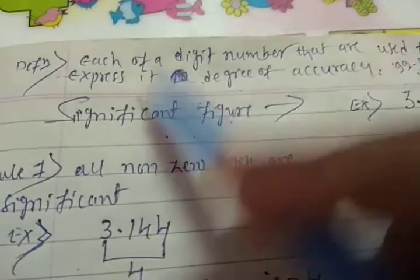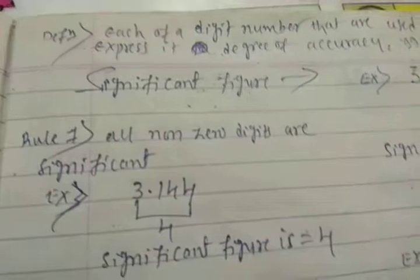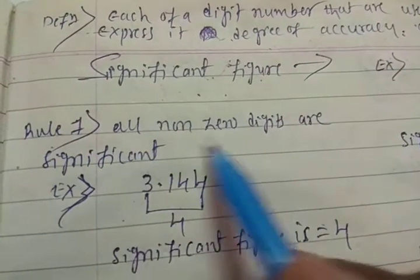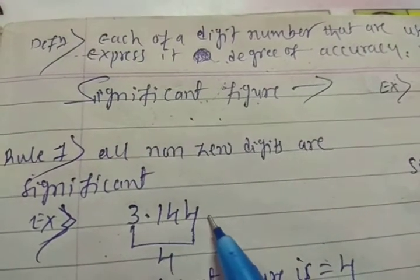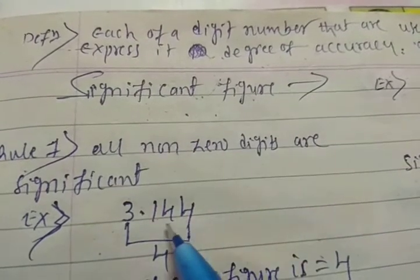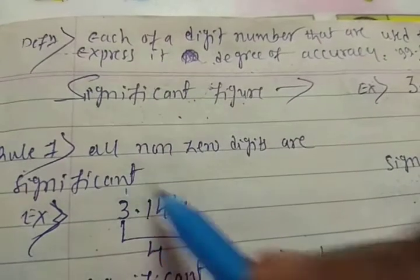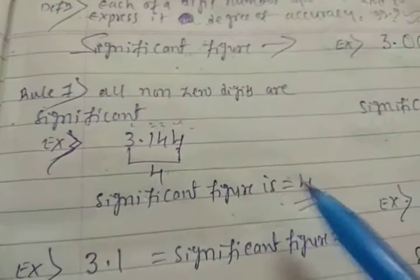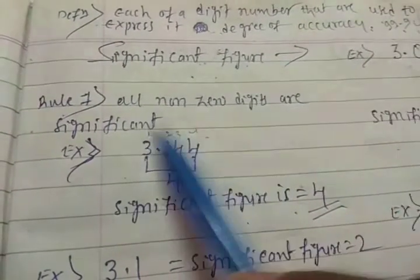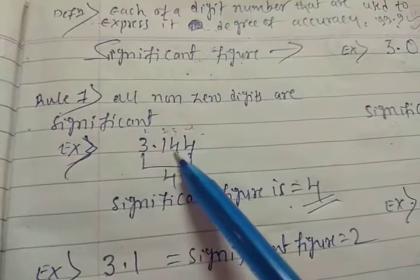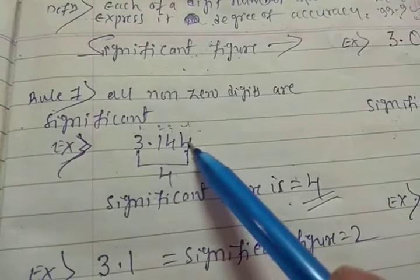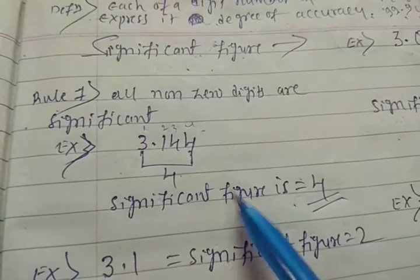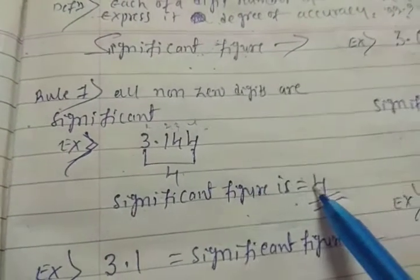Let's check some examples along with the rules. Rule one: all non-zero digits are significant. For example, 3.141 — here no digit is zero, so all are non-zero digits. There are four numbers here: first, second, third, and fourth. So the significant figure count is four. In questions, they may ask what is the significant figure of a given number.